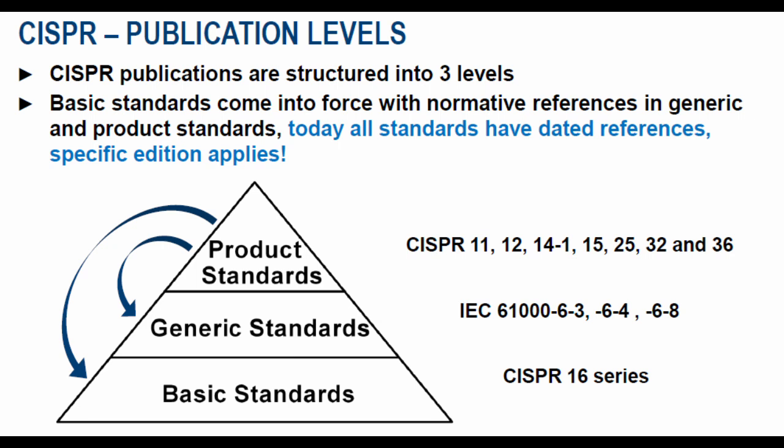In the generic standards, IEC 61000-6 series covers emission testing. IEC 61000-6-3 is for equipment in a residential environment, IEC 61000-6-4 is for equipment in an industrial environment, and the newly added IEC 61000-6-8 is for professional equipment in commercial and light industrial locations. These three levels define how standards are classified as basic, generic, and product standards.